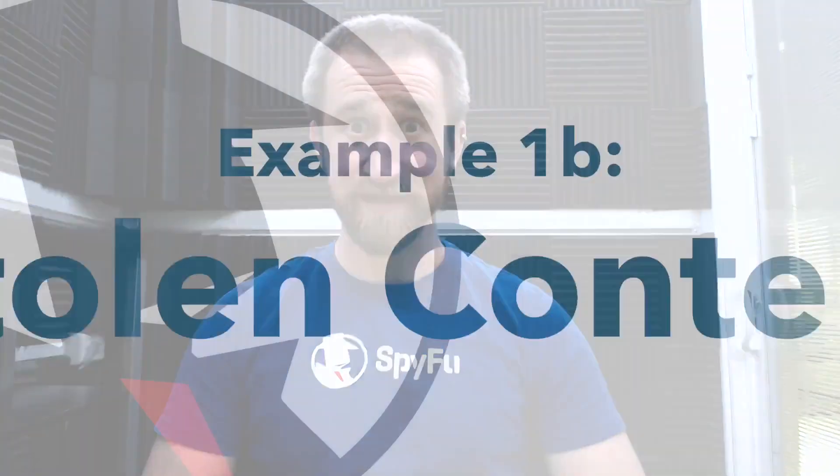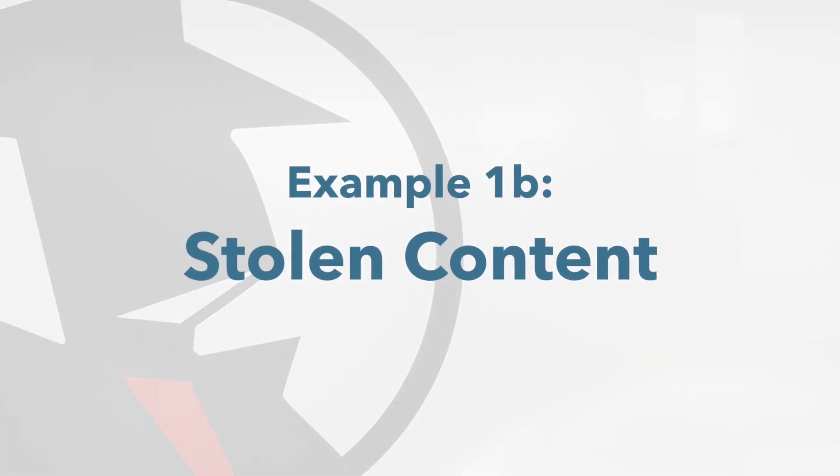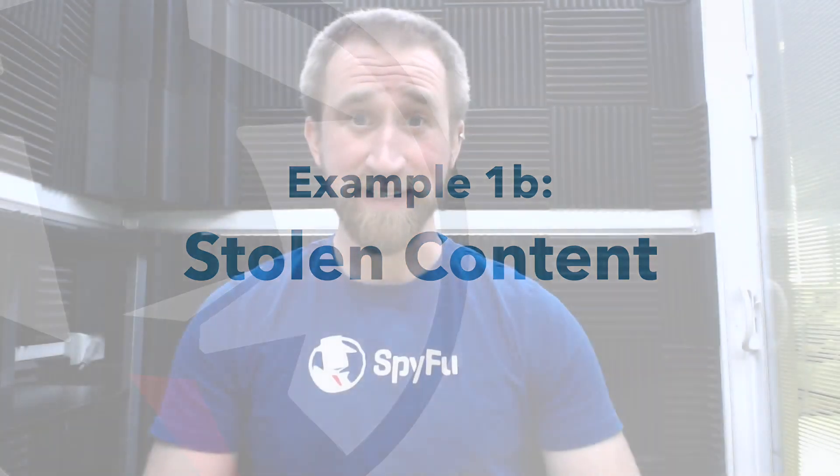Which brings us to our next important thing: checking for plagiarism. Quality content gets noticed, and sometimes it's straight up stolen. Though duplicate content and plagiarized content happen for different reasons, the technique for finding them using search operators is actually very similar. If you suspect that some of your content is being stolen, here's how you go about finding it.